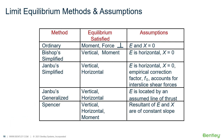If we look through every different method of limit equilibrium analysis, we see that the primary difference is what assumption they've made regarding their normal and shear force between slices. For example, in the ordinary method, we satisfy moment equilibrium and force perpendicular and set E and X equal to zero. In Bishop's method, we solve for vertical equilibrium and moment equilibrium, and we assume that E is horizontal and X, the shear force, is zero. Then we come to Spencer's method, which solves for vertical, horizontal, and moment equilibrium, and says that the resultant of E and X are of constant slope.